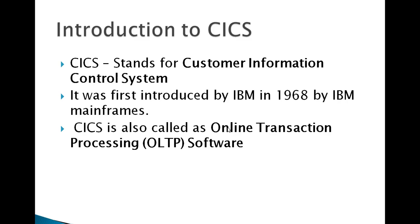Batch processing might take hours or minutes to run a particular job and produce results, whereas online won't take any minutes or hours to get results. You're provided with a screen where you enter details, and once you enter them, you get results back immediately. Online is much faster compared to batch.